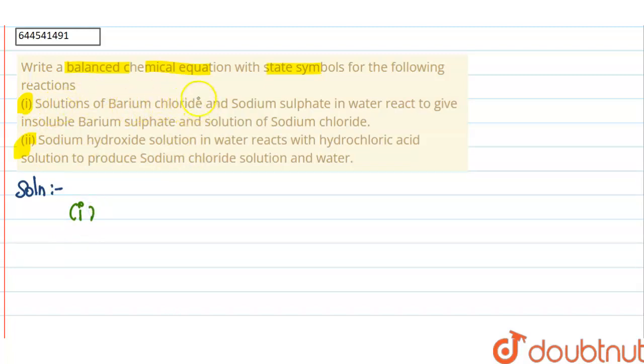Write reaction one. It will be solution of barium chloride, so barium chloride is written as BaCl2, plus sodium sulfate in water, so it will be written as Na2SO4. It will react to...